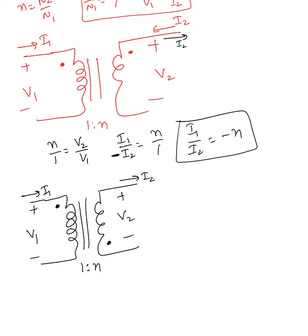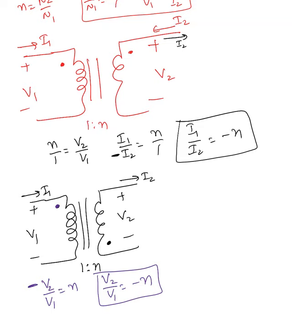Here is the next example. i1 current is entering the dot, so the dotted terminal must be positive, but the given terminal is negative. It's supposed to be positive but it ends up being negative, so negative v2 over v1 equals n, which means v2 over v1 equals negative n.